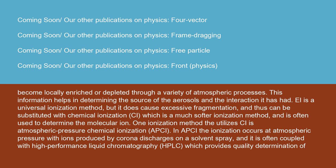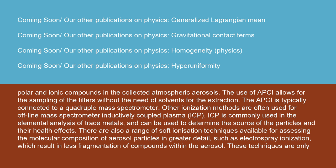EI is a universal ionization method, but it does cause excessive fragmentation and thus can be substituted with chemical ionization (CI), which is a much softer ionization method and is often used to determine the molecular ion. One ionization method that utilizes CI is atmospheric pressure chemical ionization (APCI). In APCI, the ionization occurs at atmospheric pressure with ions produced by corona discharges on a solvent spray, and it is often coupled with high-performance liquid chromatography (HPLC), which provides quality determination of polar and ionic compounds in the collected atmospheric aerosols. The use of APCI allows for the sampling of filters without the need for solvents for extraction. The APCI is typically connected to a quadrupole mass spectrometer.